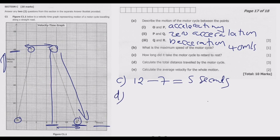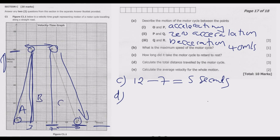Question D: calculate the total distance traveled by the motorcycle. To find the total distance we need to find the area under the graph. The graph has three segments: triangle A, rectangle B, and triangle C. We add the areas of all three segments together.